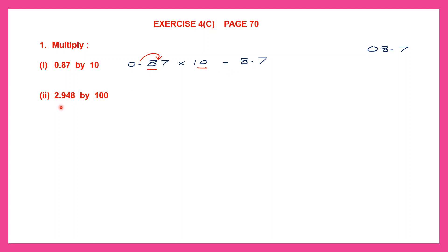Next: 2.948 by 100. So we have 2.948 multiplied by 100. Now look at the number of zeros in 100 — there are two zeros. So the point will move two places to the right and come here. So now our number is 294.8.